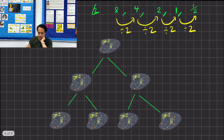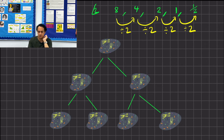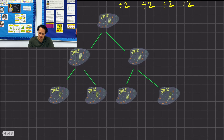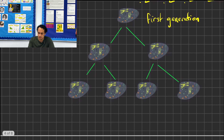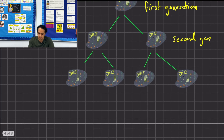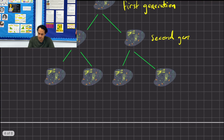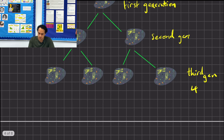Let's look at an example in nature. When cells divide in a process called mitosis, one cell divides into two cells, and two cells divide into four cells. That's an example of a geometric sequence in nature: first generation has 1 cell, second generation 2, third generation 4, and so on.